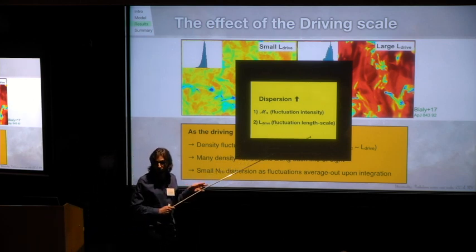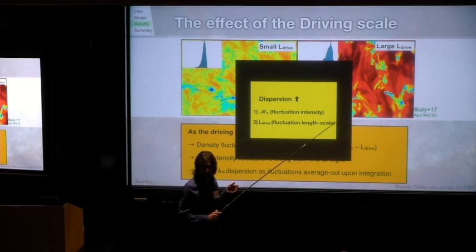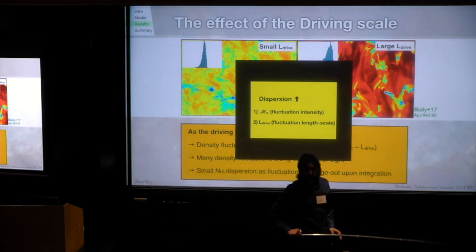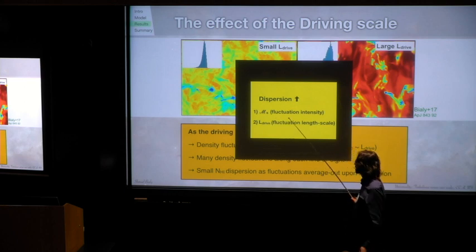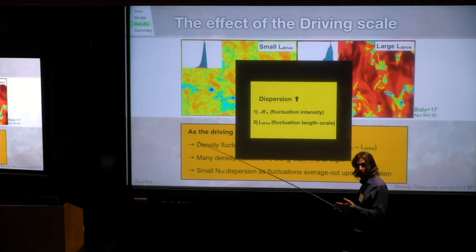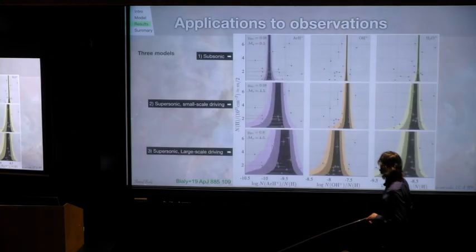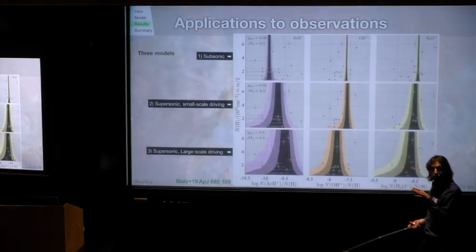To summarize these two points, the dispersion in H1, but also in other species, I just show here H1 as an example, increases as the Mach number increases because the fluctuation intensity increases. And it increases as the driving scale increases because the fluctuation length scale or coherent scale increases.